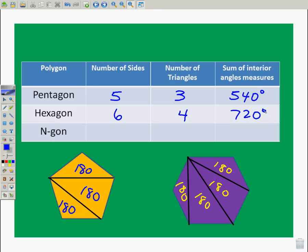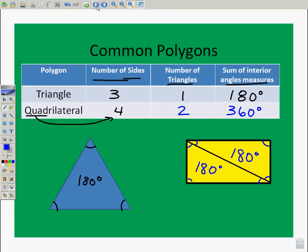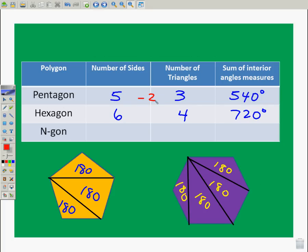In general, let's see the pattern here. I'm going to go back for a second. We have 3, and if we subtract 2, we get 1. If we subtract 2, we get 2. And 1 was 180. So, if I multiply this by 180, it equals 180. If I multiply this by 180, it equals 360. Let's go over here. I subtract 2, and then I multiply by 180. I subtract 2, and I multiply by 180.